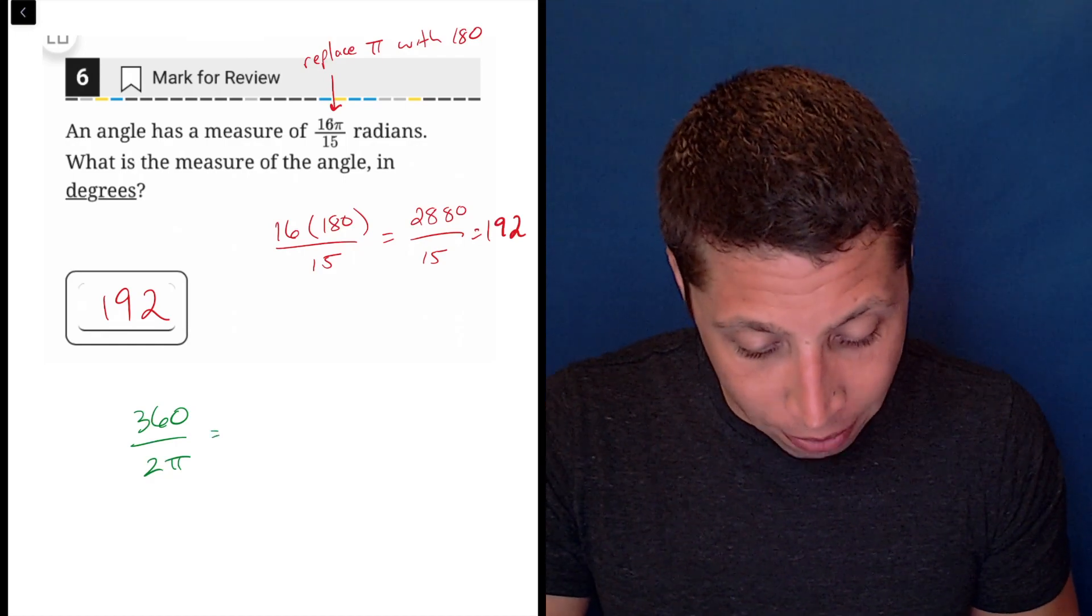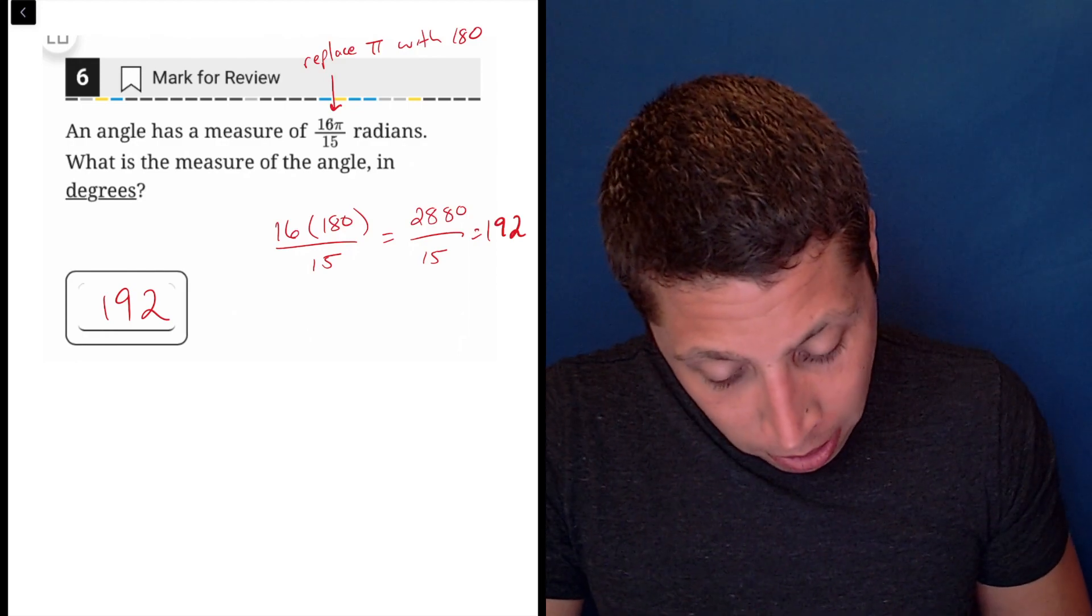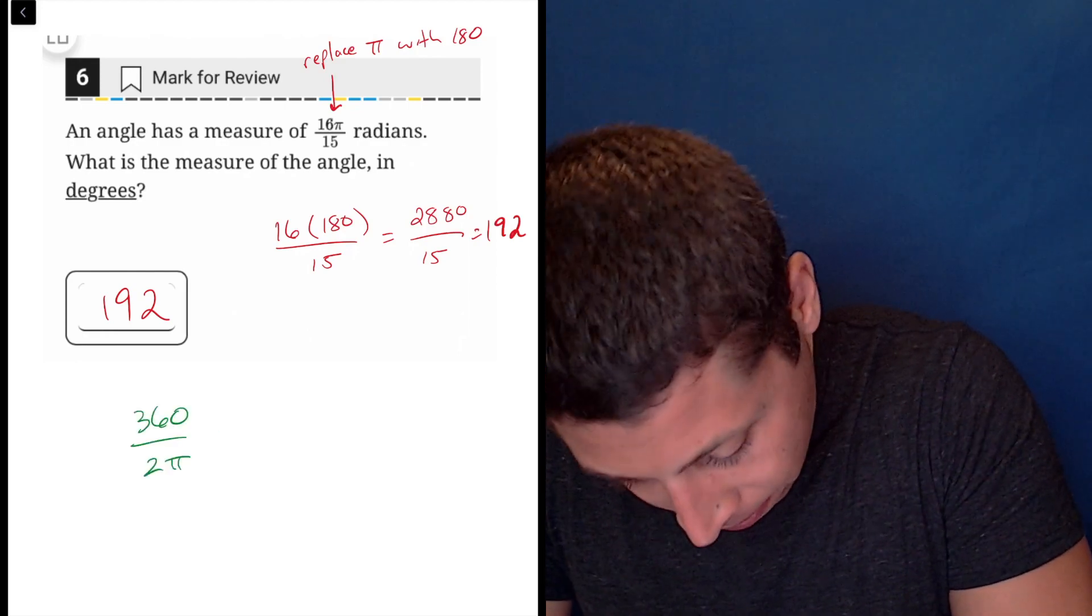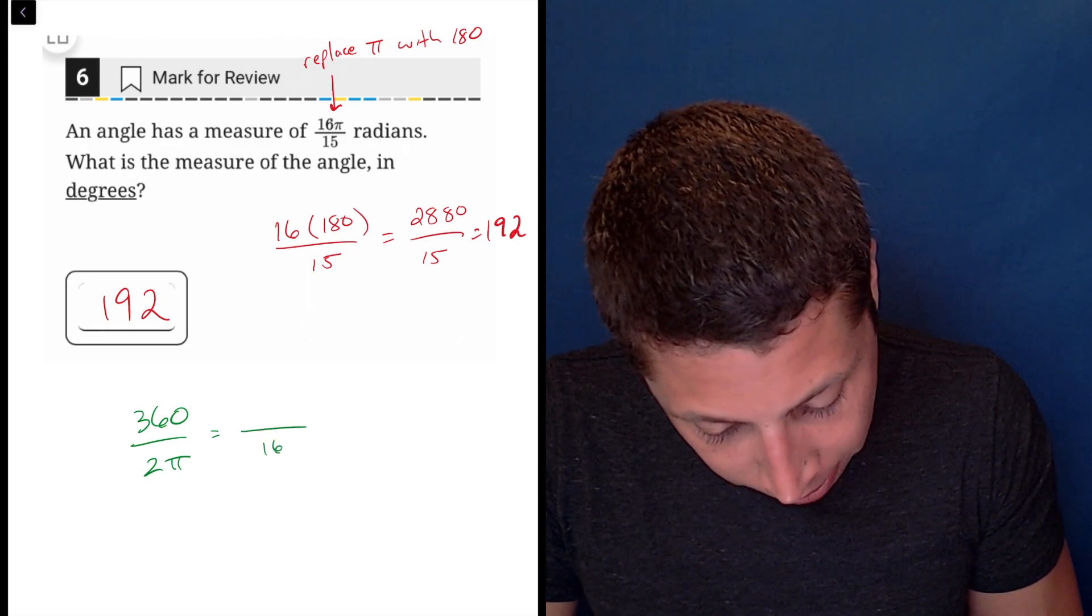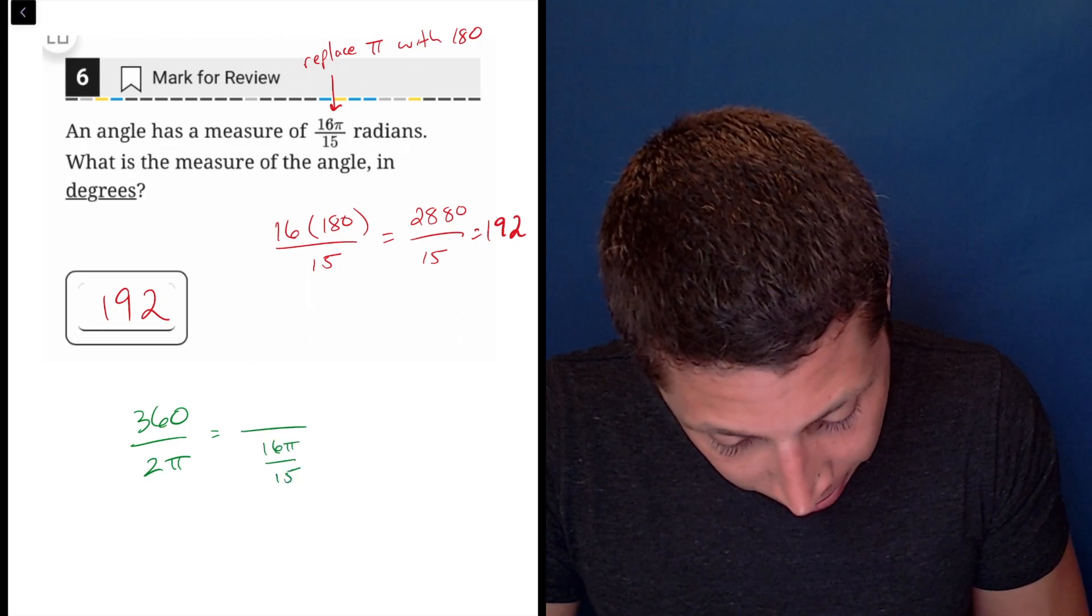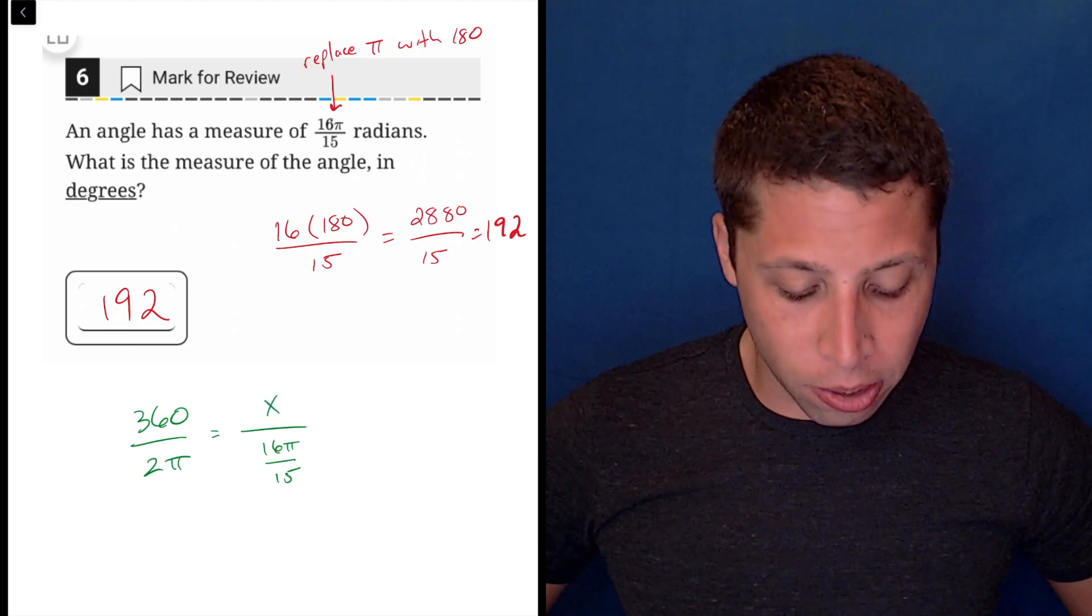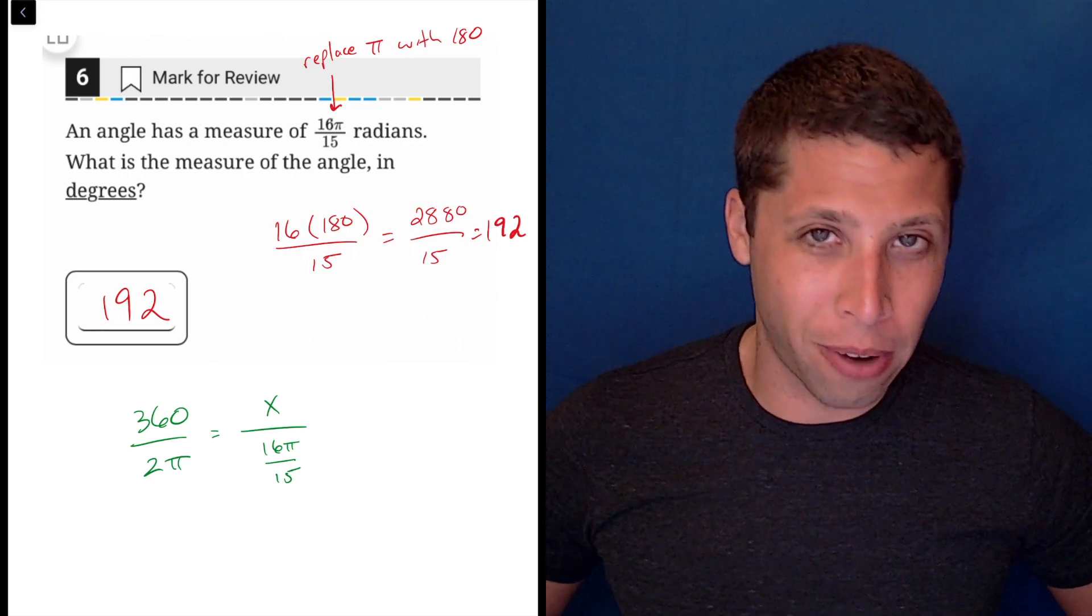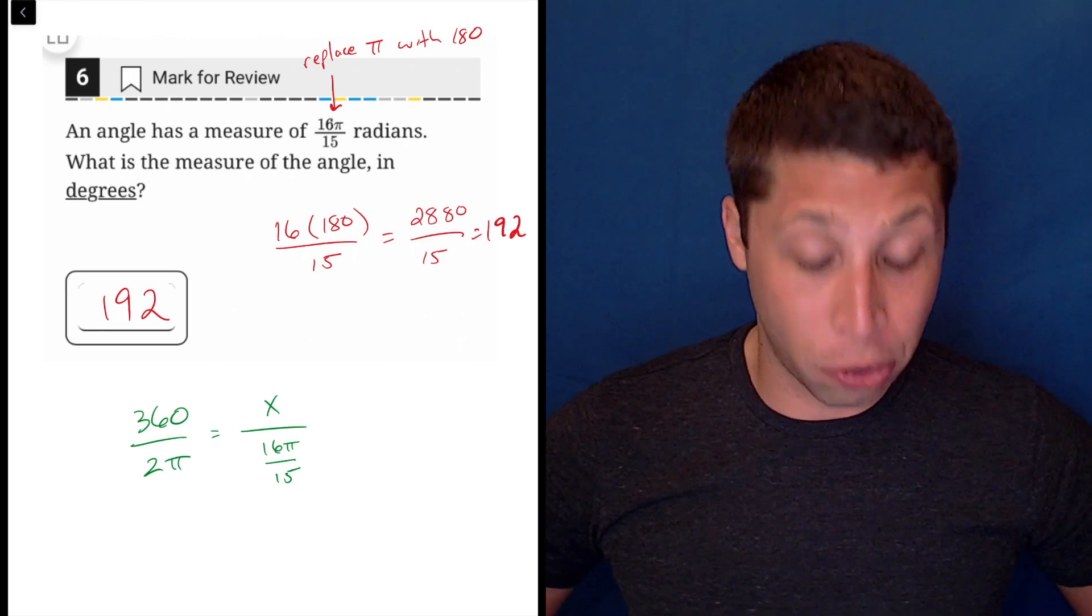So if we have, in fact, let me flip this so it's a little easier on my brain. You know what? No. Let's keep it. If we have 16 pi over 15 radians, we can put that down here. And so it's a little annoying because we have a fraction within a fraction, but basically what we're saying is, okay, the relationship is going to be preserved.